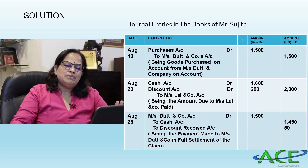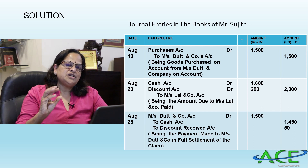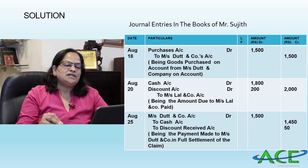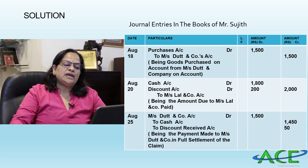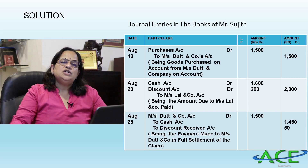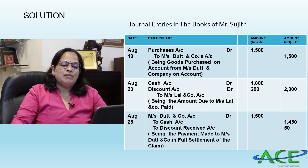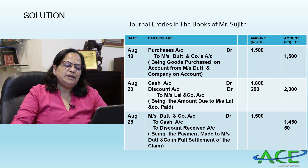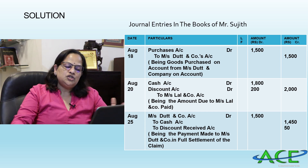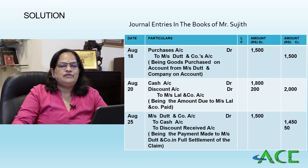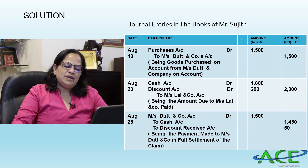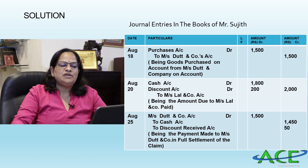August 18th — Purchases Account Dr. to Messrs Dutt and Company ₹1,500, being goods purchased on credit. August 20th — Cash Account Dr. ₹1,800, Discount Account Dr. ₹200, to Messrs Lal and Company ₹2,000, being amount received in full settlement. August 25th — Messrs Dutt and Company Dr. ₹1,500, to Cash Account ₹1,450, to Discount Received ₹50, being payment made to Messrs Dutt and Company in full settlement.